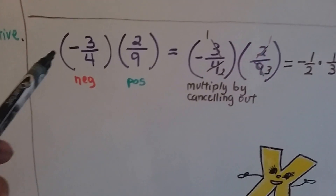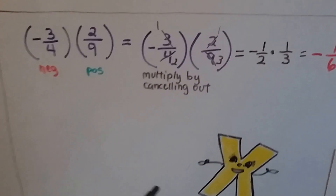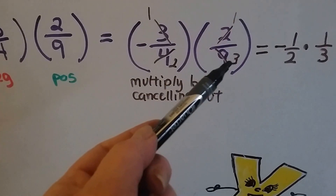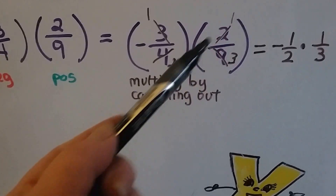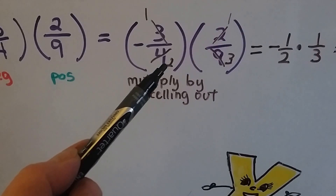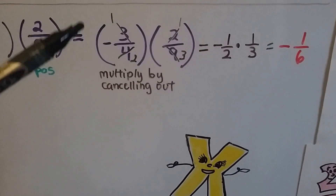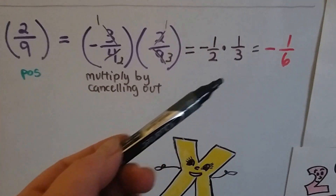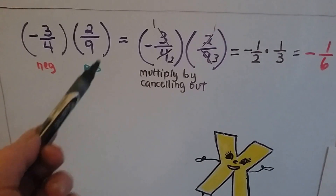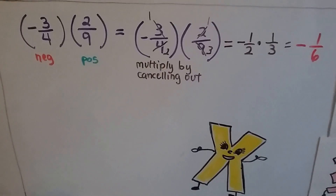Now we have negative three-fourths and positive two-ninths. We can multiply this by canceling out: the 3 and the 3 — one 3 over three 3s — gives us 1 and 3. The 2 and the 4 — one 2 here and two 2s there — gives us 1 and 2. So 1 times 1 is 1, and 2 times 3 is 6. We have one negative, which is an odd amount, so the answer is negative one-sixth.